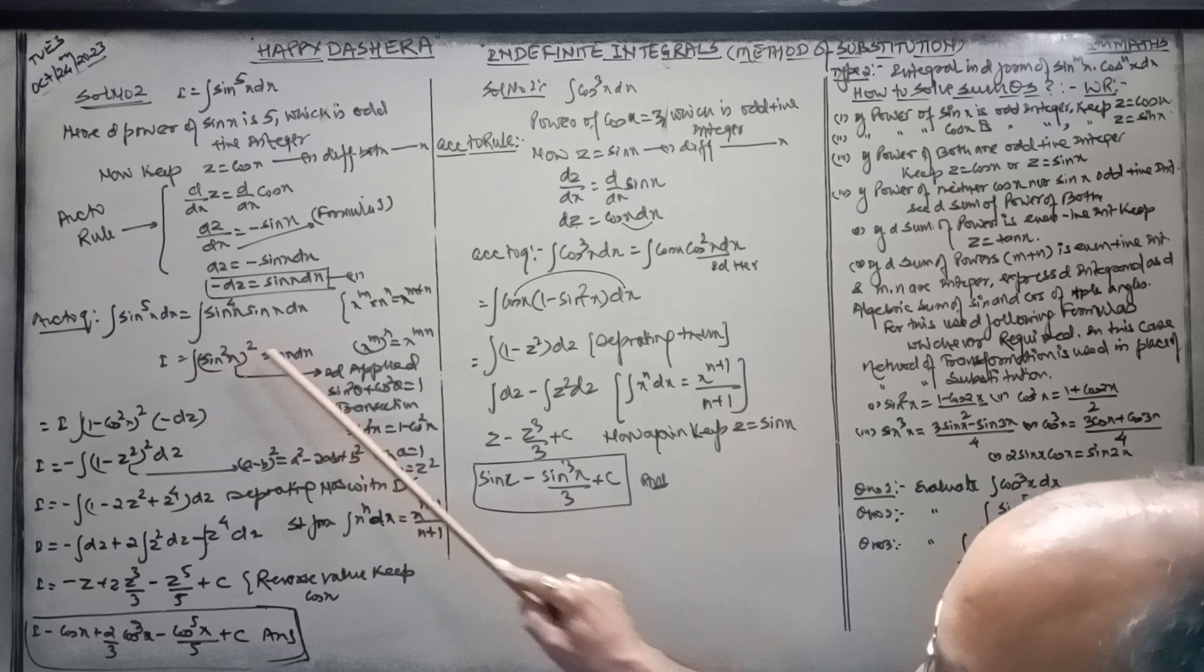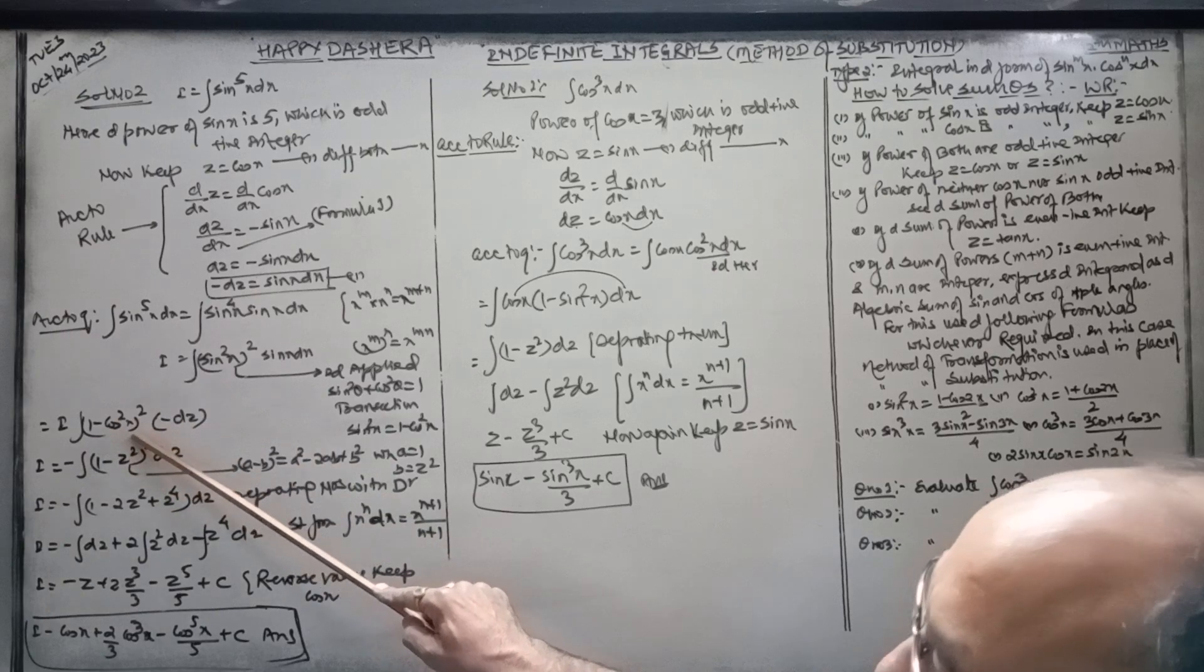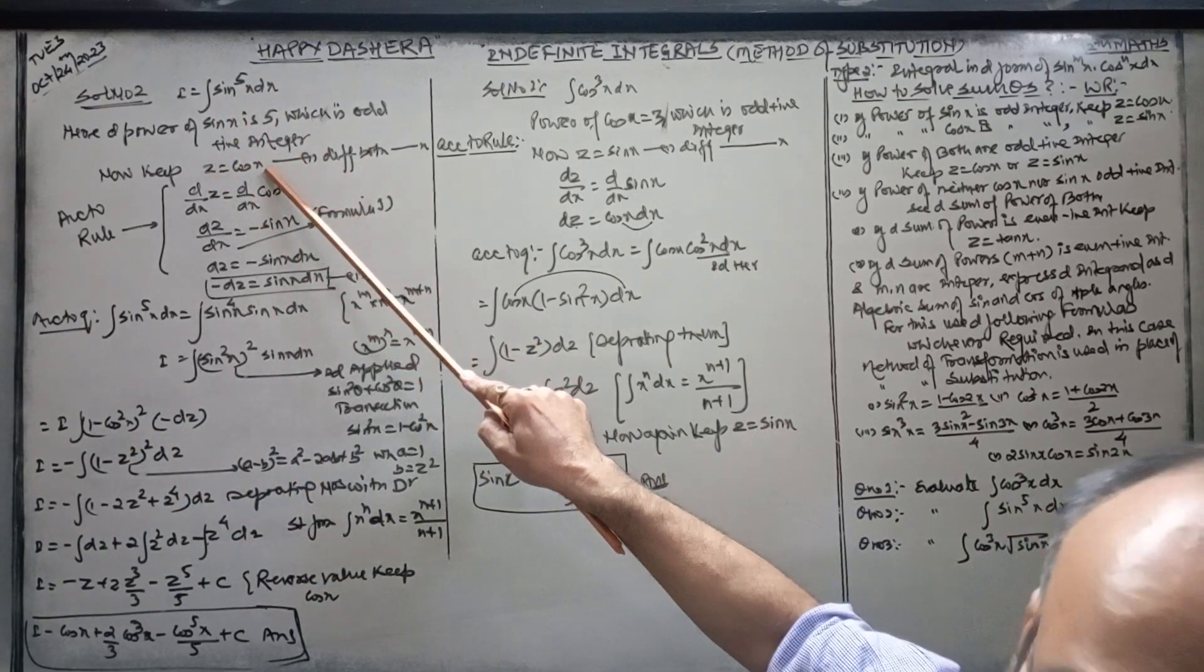Here, only you have to use, after the substitution, sin² x. You will keep 1 minus cos² x. Why? Because according to the rule, z is equal to cos x.